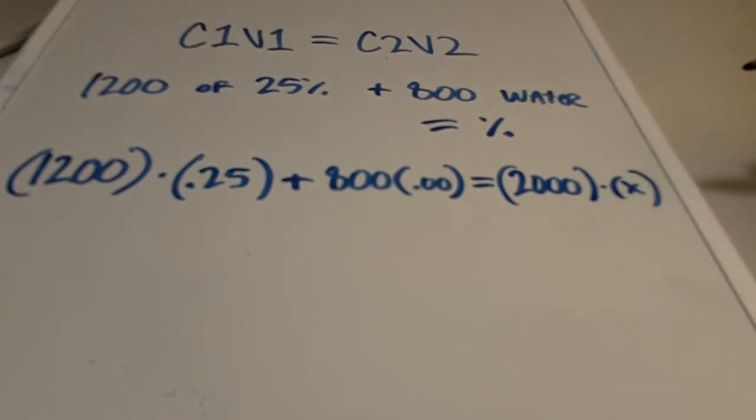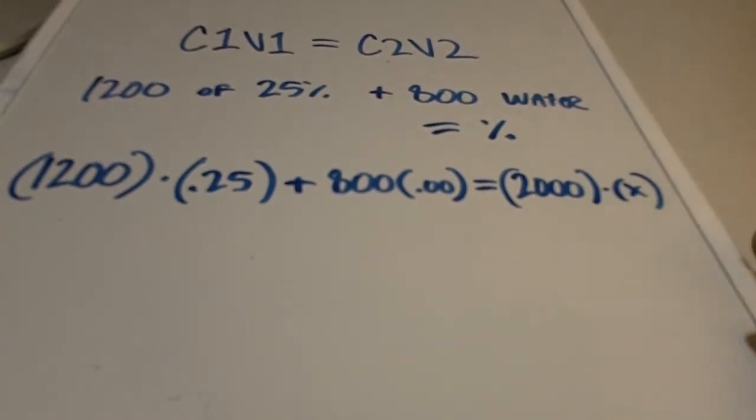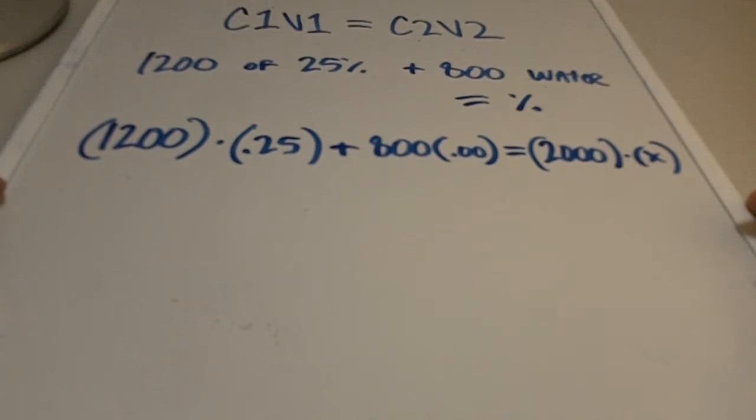So the way we could do that is to draw an equation line, and it would look like this. So you'd have 1200 times 0.25 plus, then we have 800 of water.